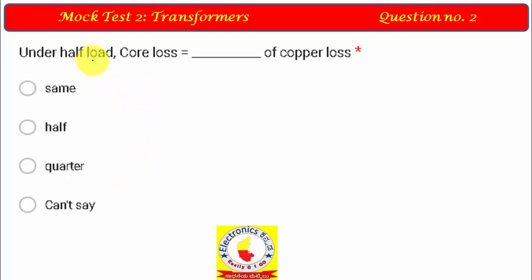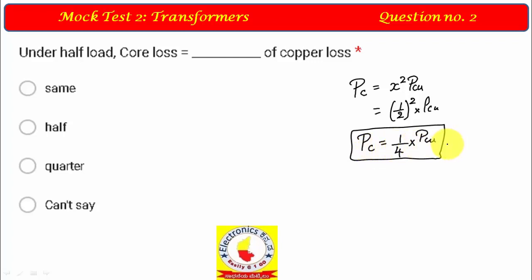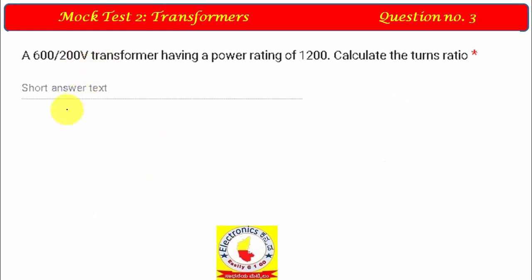Question 2: Under half load, core loss equals what fraction of copper loss? The formula is: core loss (iron loss) = x² × Pcu. At half load, x = 1/2, so copper loss = (1/2)² × Pcu = 1/4 × Pcu. Core loss is a fixed quantity, while copper loss varies with load. The answer is option C — one quarter.